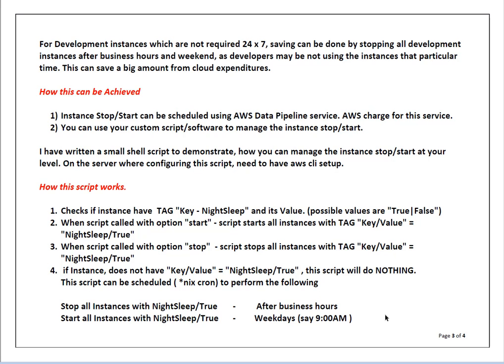How can we achieve this? One way is to use the AWS Data Pipeline service, which is not very costly — a very nominal charge — but Amazon does charge for the service. Another way is to write your own custom script or some basic software to manage instance start and stop, or schedule the instances. I have written a small shell script to demonstrate how you can manage instance start and stop at your level, and I will jump to the technical session in a minute or two, but first I want to give you the idea theoretically.